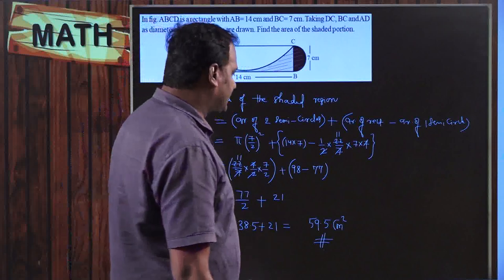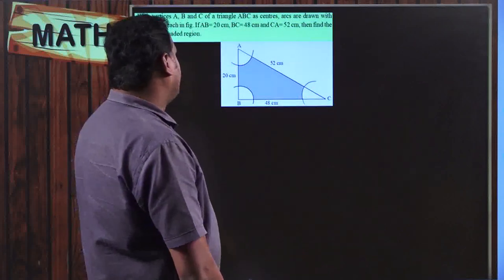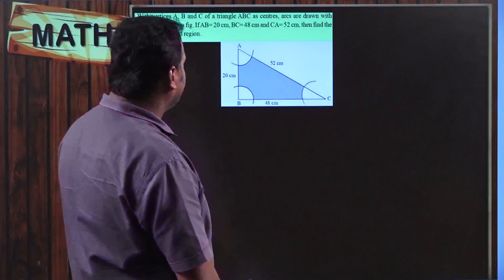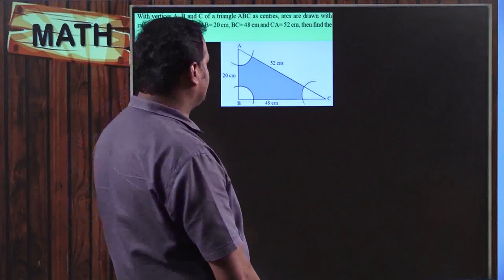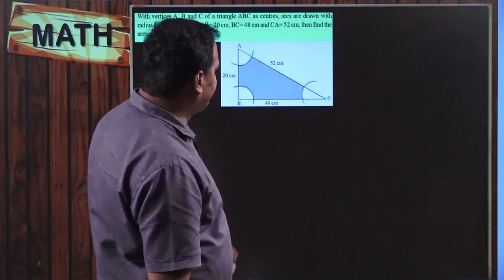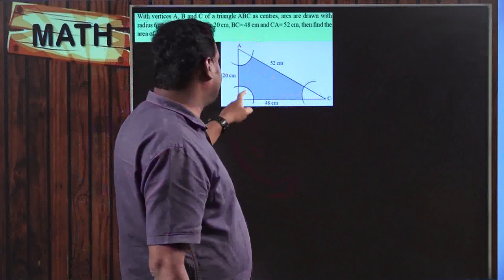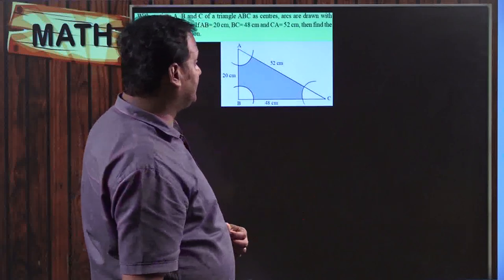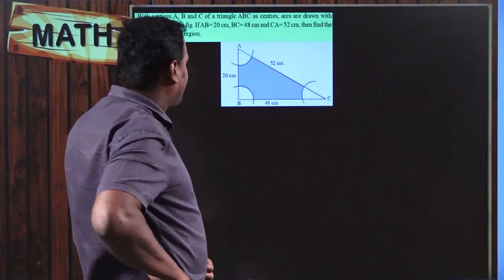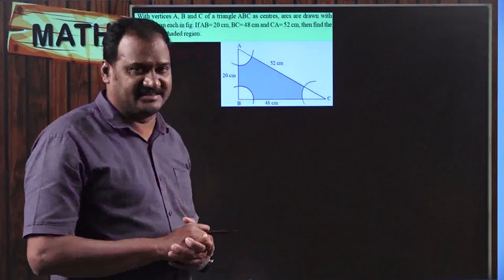Moving on to the next problem: with vertices A, B, C of a triangle as centres, arcs are drawn with radius 6 cm each. AB = 20 cm, BC = 48 cm, CA = 52 cm. Find the area of the shaded region. To find this, we need: area of the entire triangle minus area of the three sectors. But first, let us check whether this is a right-angled triangle by applying Pythagoras' theorem.